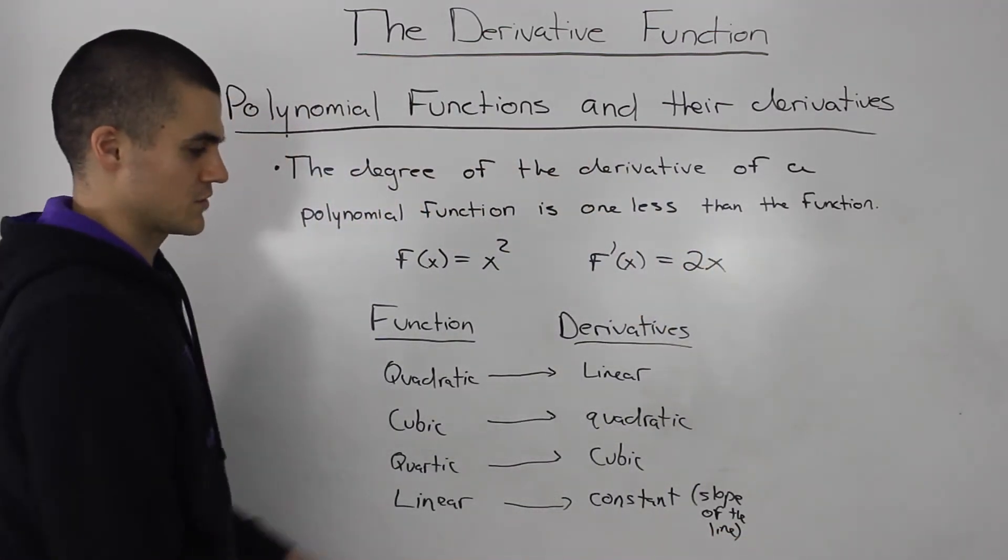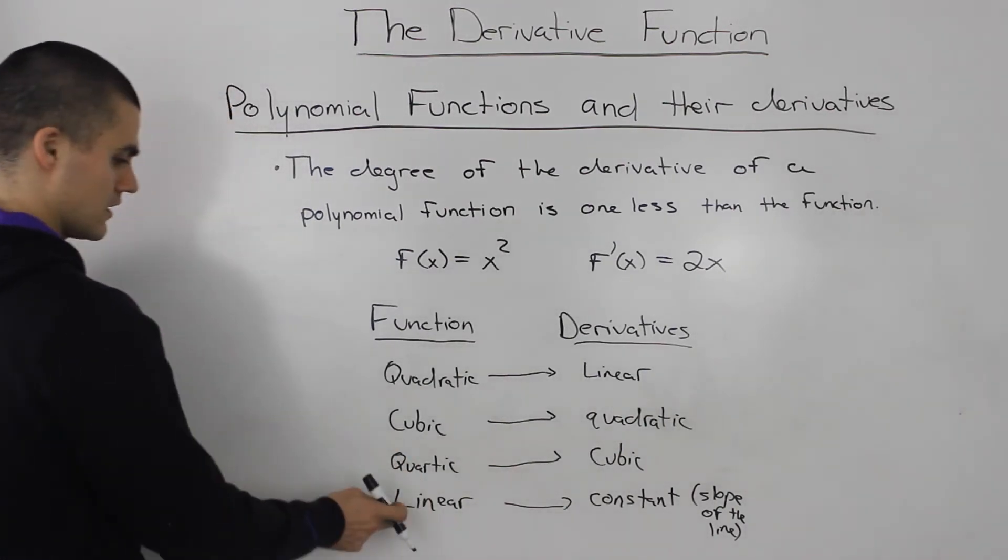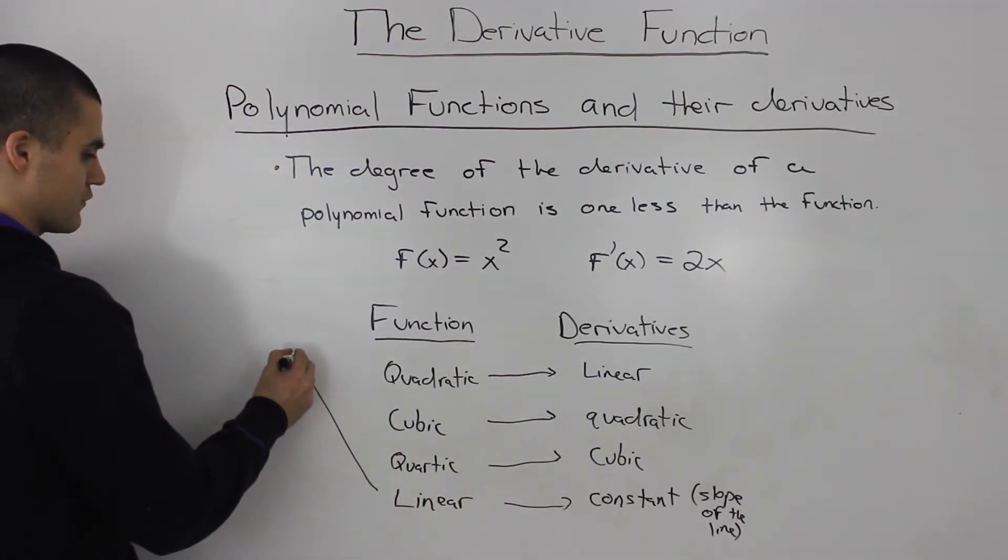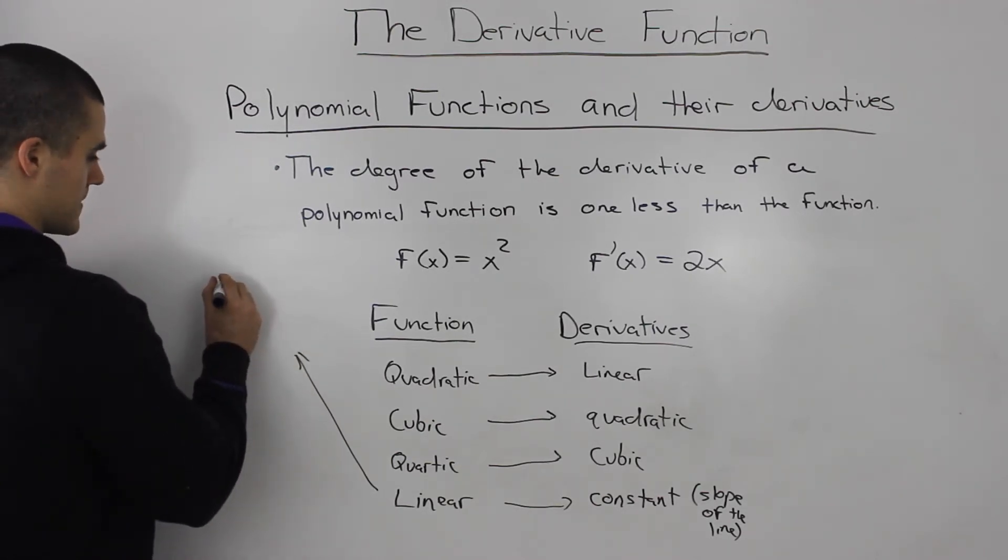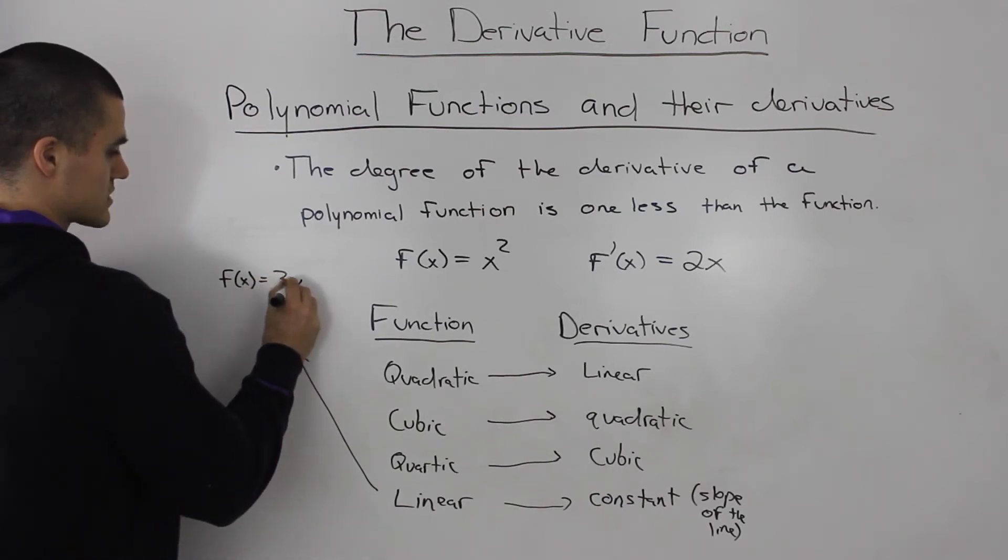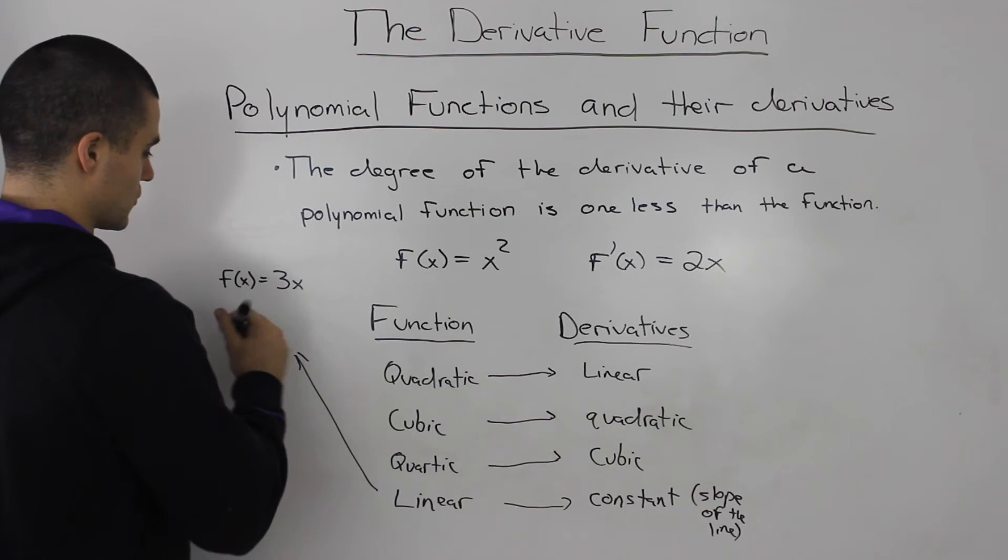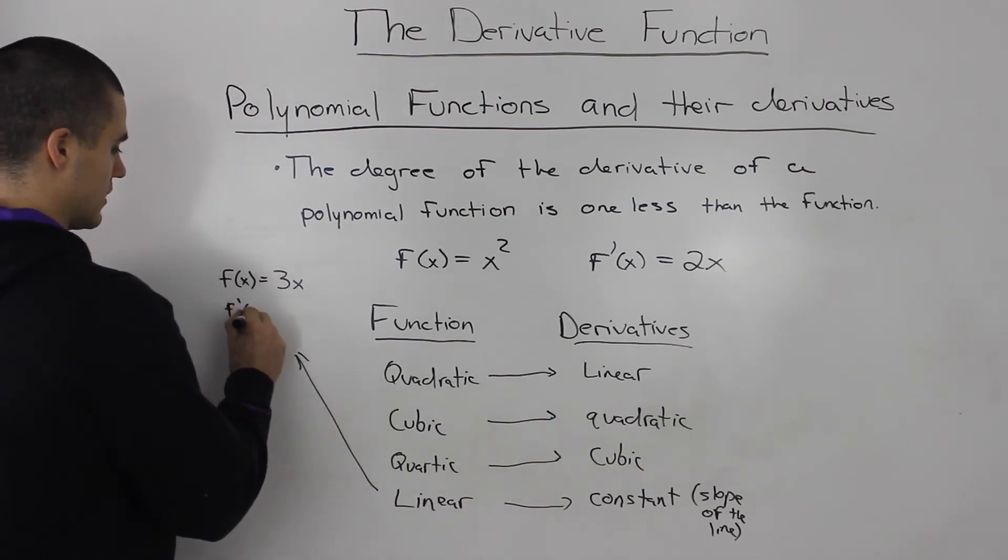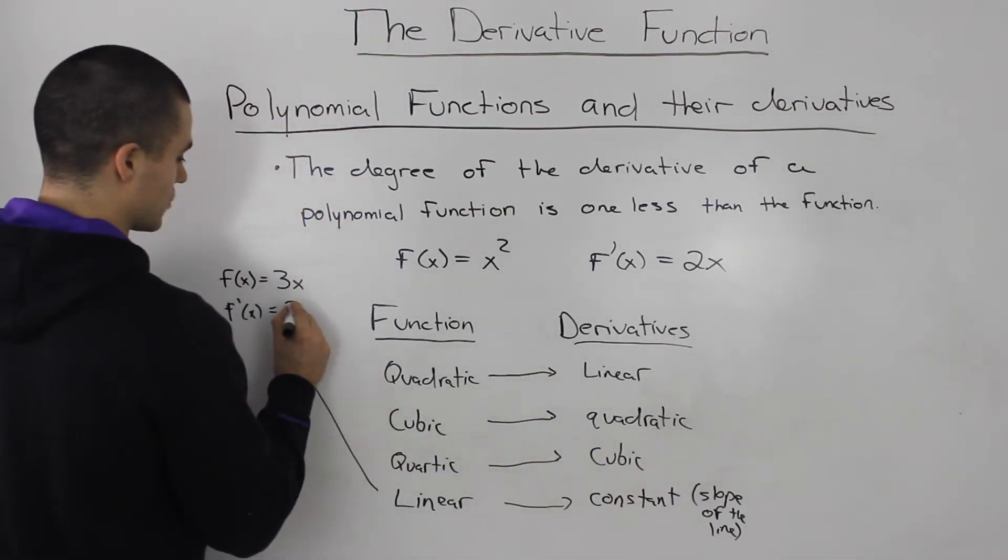So that relationship always holds. If you want to prove this yourself for a little challenge, try to take the function, let's say 3x, use the definition of a derivative or the difference quotient, and you'll get that the derivative of this linear function is a constant, and it's always equal to the slope of the line.